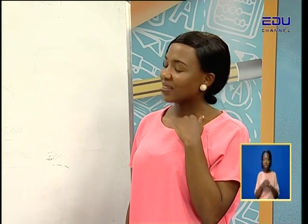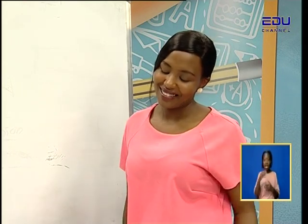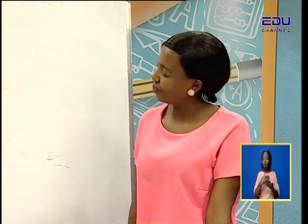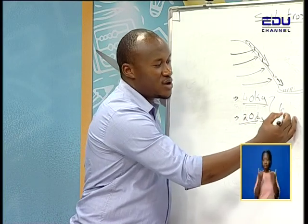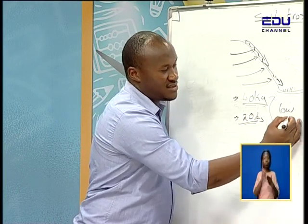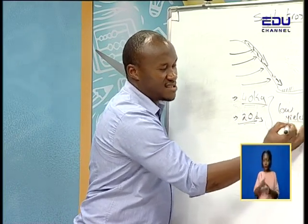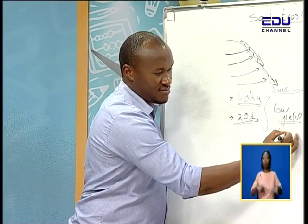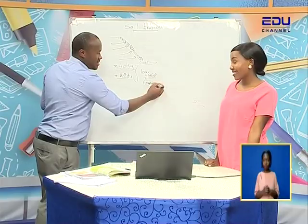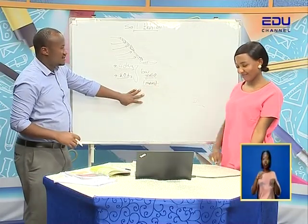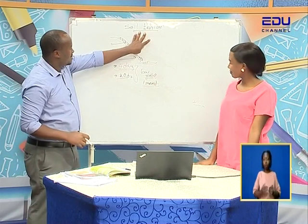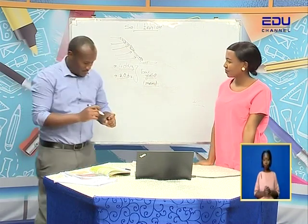If you were to eat the weeds, they would be very delicious — they have all the nutrients. That's why the yield went from 40 to 20 kilograms. This is what we call low yields — low harvests. Those are some of the effects of soil erosion.